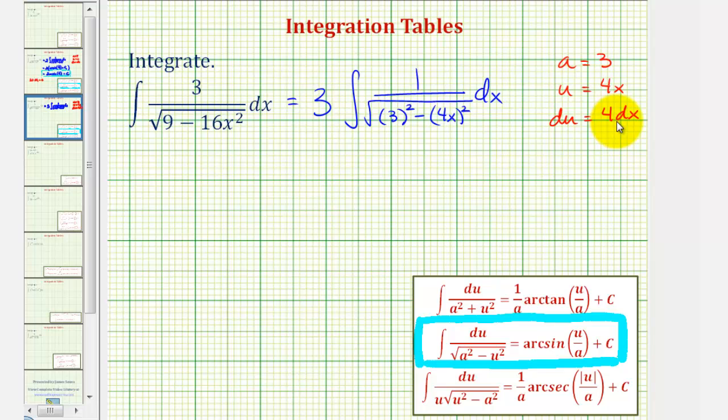So notice if we divide both sides by four to solve for dx, we would have one-fourth differential u equals differential x. So now let's rewrite this in terms of u.